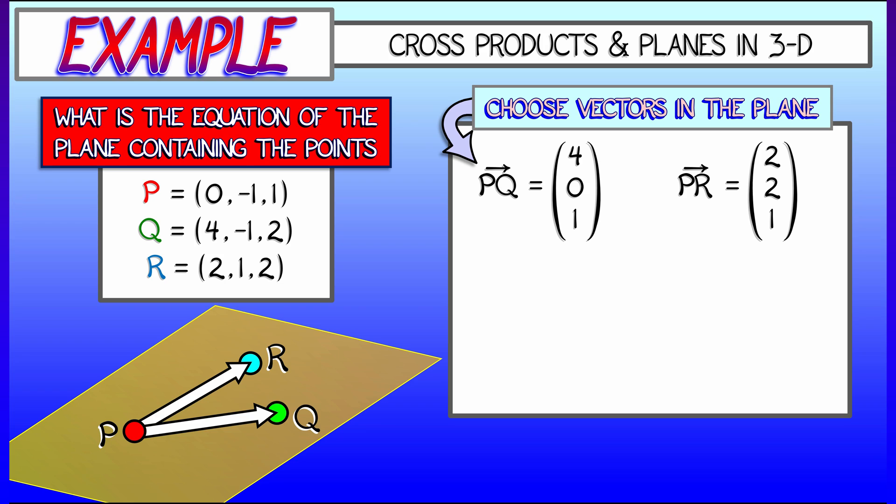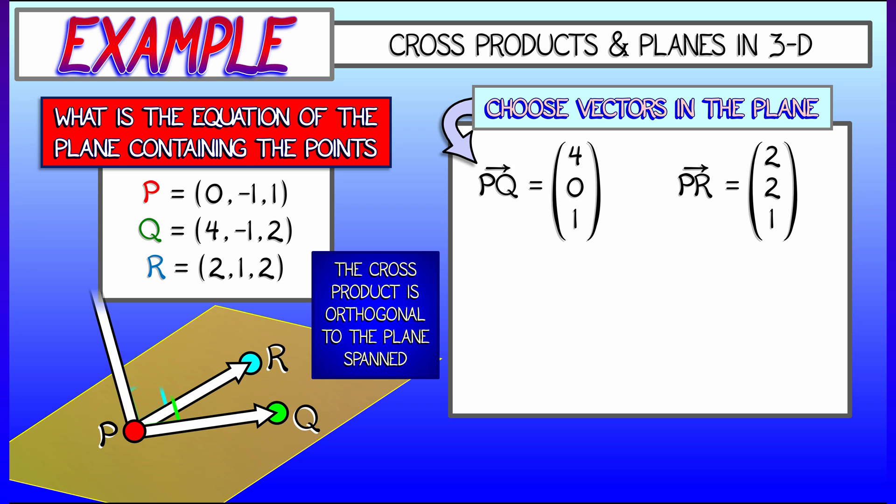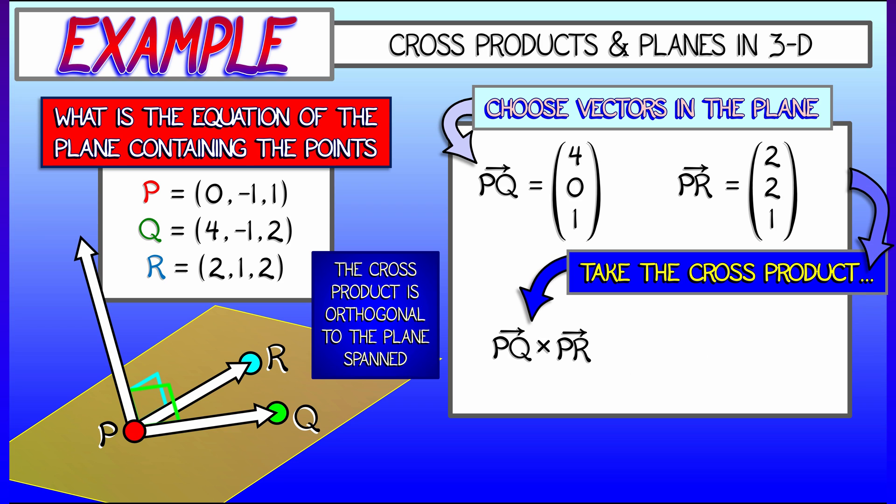Now, those two vectors definitely lie within the plane. It's really easy to describe a plane with an orthogonal vector, and there we go, the cross-product, PQ cross PR. Once we use the formula, compute that, we get a vector that is automatically orthogonal to the plane.